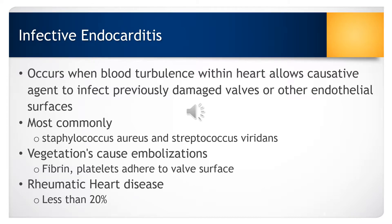Infective endocarditis occurs when blood flow turbulence within the heart allows the causative organisms to infect previously damaged valves or the endothelial surfaces. This can occur in individuals with a variety of cardiac conditions, or in patients who do not have cardiac conditions at all. Most commonly it is caused by Staphylococcus aureus or Streptococcus viridans bacteria.